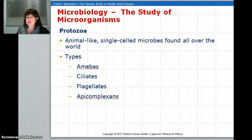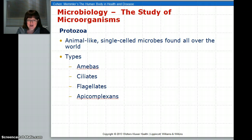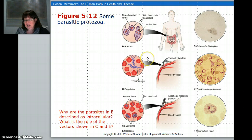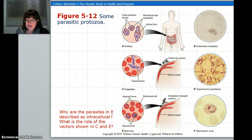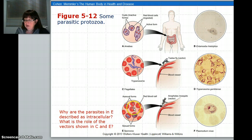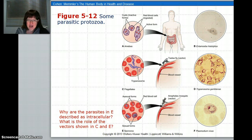Next, protozoans are animal-like single-cell organisms. This includes amoebic dysentery, ciliates or parameciums, and flagellates associated with malaria and sleeping sickness. They are organisms that get into the body and are passed on — some by food, some by a vector. A vector is an organism that transfers a disease-carrying organism. The host is the organism they live in; the parasite is the one that lives inside it. Amoebic dysentery is often the cause of traveler's diarrhea.